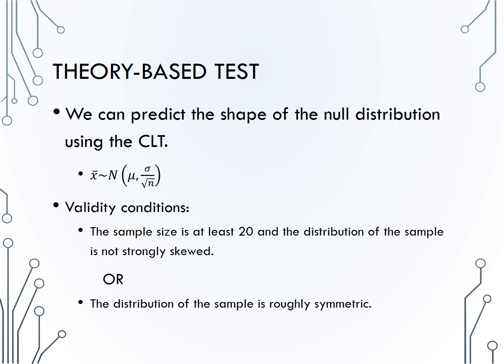Now, there are two options to satisfy the validity condition. Either the distribution of the population, and therefore the sample, is roughly symmetric, or the distribution of the sample is not heavily skewed, and we have a sample size of at least 20.